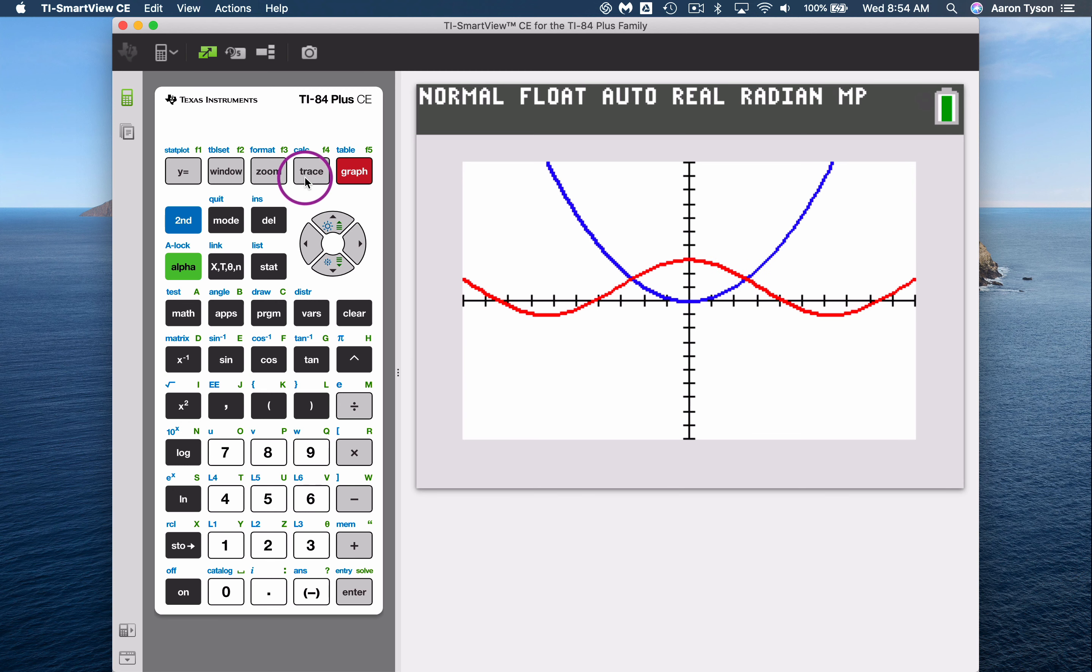We can get a kind of a sense of where this would be using the trace feature. So we click trace and you just kind of use your arrow to get over close to here. We can see we're sort of in this area here, but it's not super accurate.